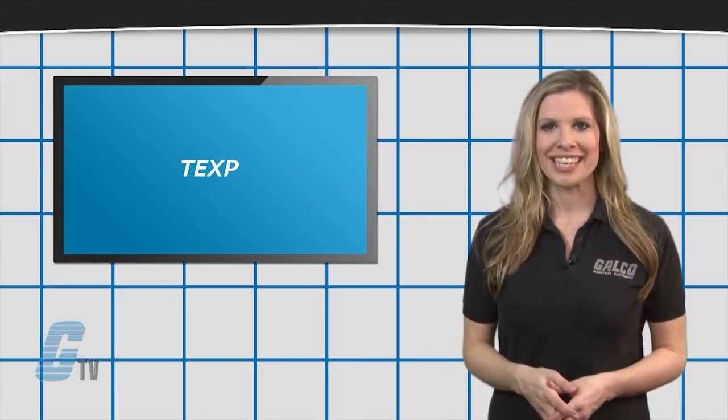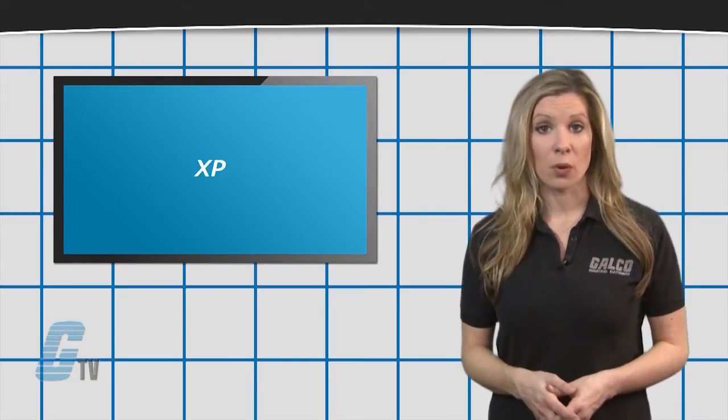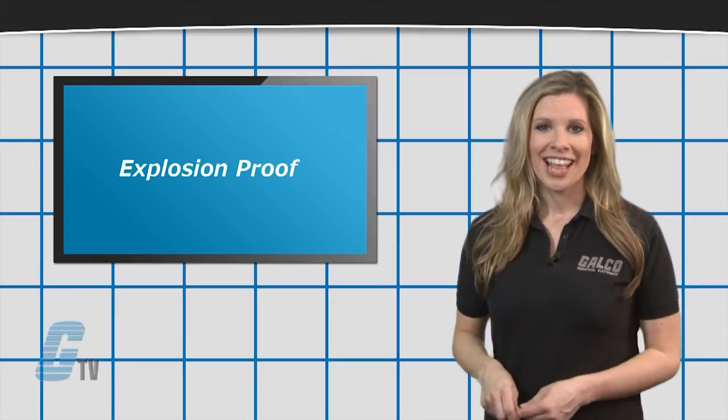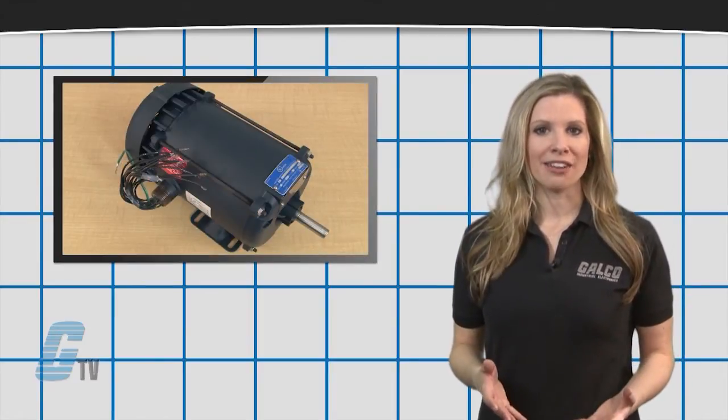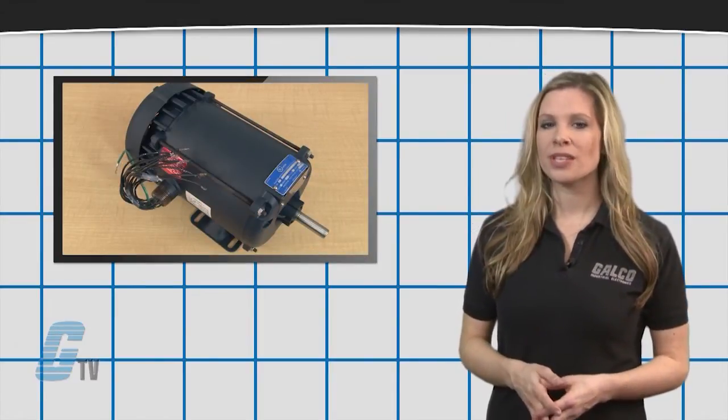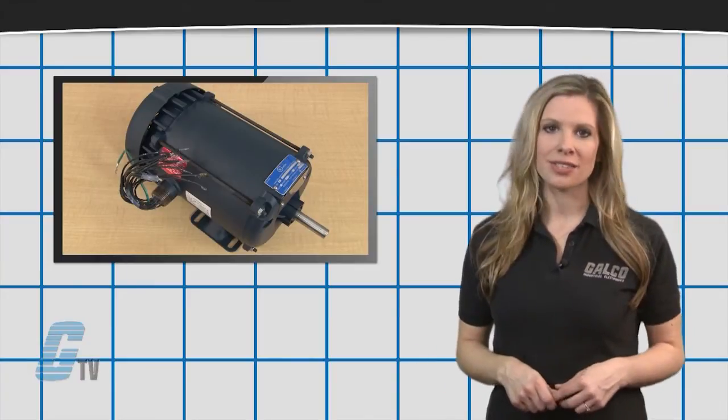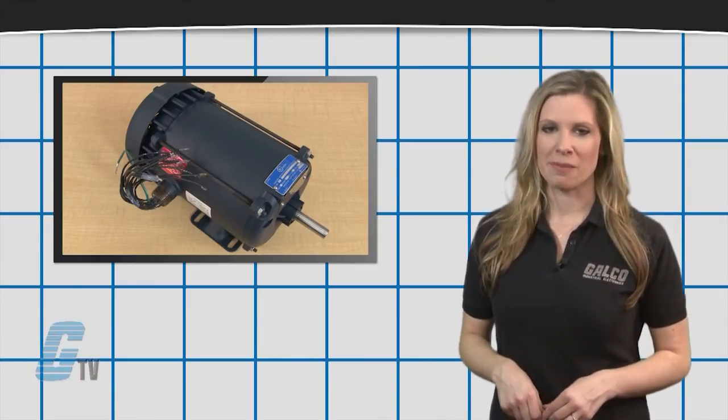Another important motor are the TEXP or XP motors for explosion proof. This type of motor is generally made of cast iron and can be used in more hazardous locations where flammable material may be present.